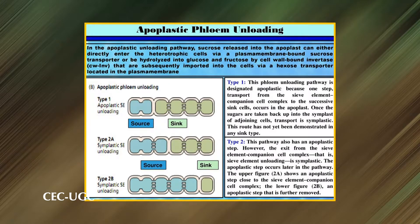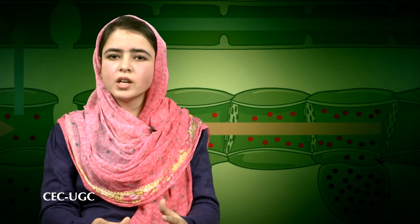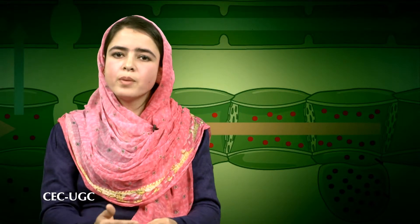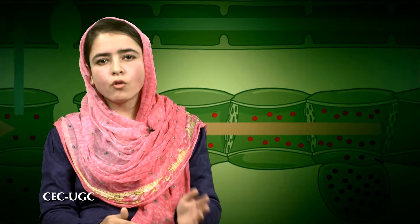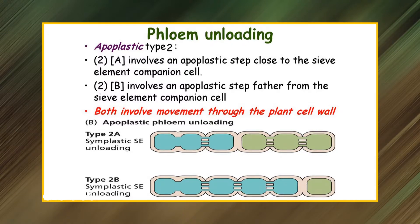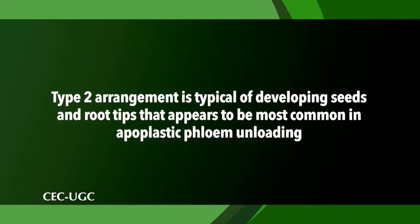The gradient and consequently flow into the sink cell is maintained by hydrolyzing sucrose to glucose and fructose. There are two possible apoplastic routes, type 1 and type 2. In principle, the apoplastic step should be located at the site of the sieve element companion cell complex. The apoplastic step could also be further removed from the sieve elements. When the apoplastic step is in close vicinity of sieve elements it is called type 2a phloem unloading, and when it is further removed from sieve elements it is called type 2b phloem unloading.